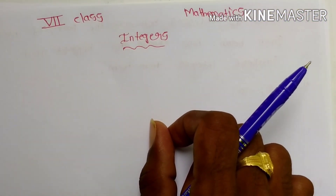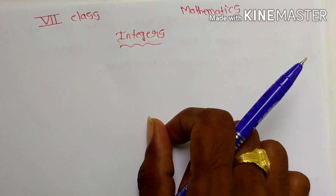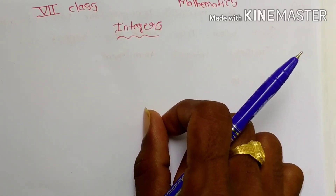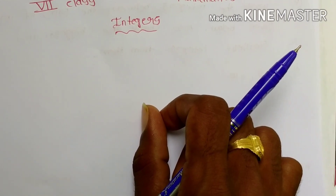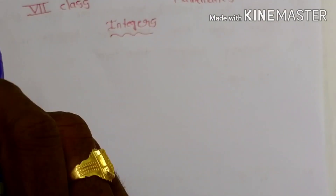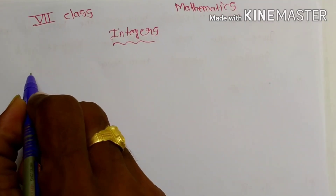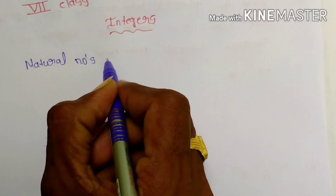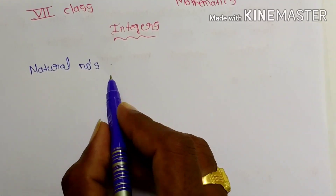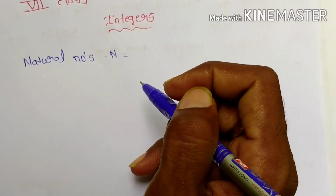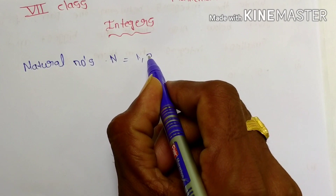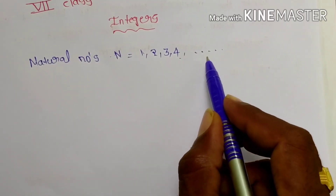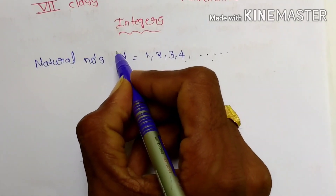Welcome back to seventh class mathematics. I am discussing with you the first chapter: integers. First, let us discuss natural numbers. Natural numbers can be represented by N. These are all counting numbers — that means 1, 2, 3, 4 and so on up to infinity. All counting numbers are called natural numbers, represented by N.